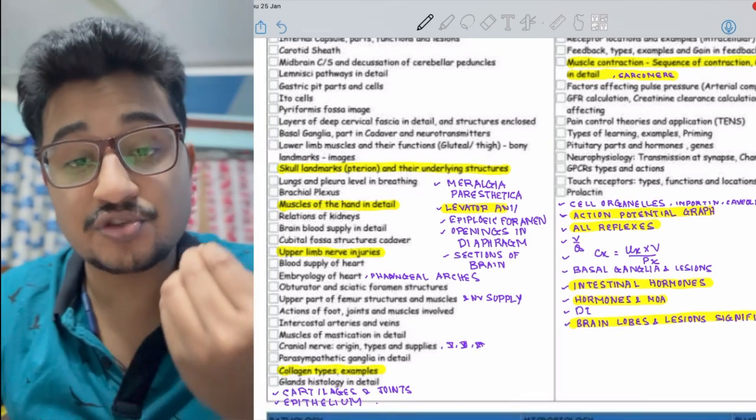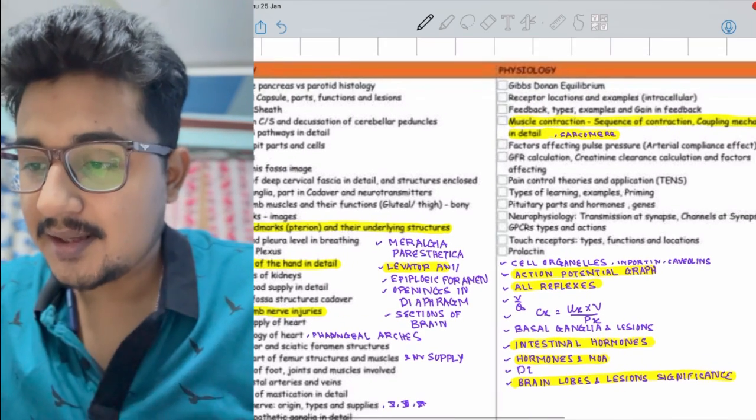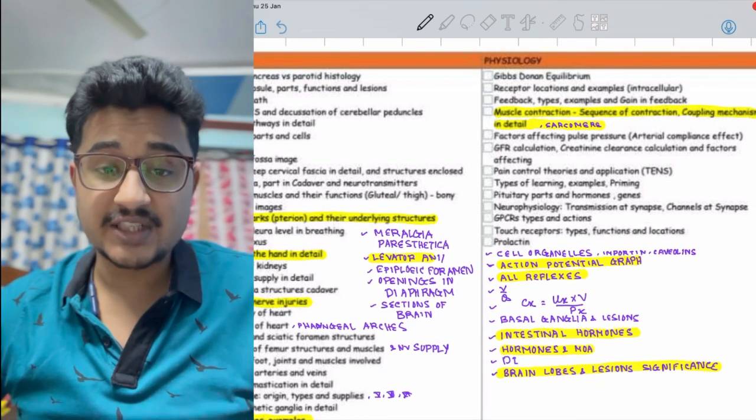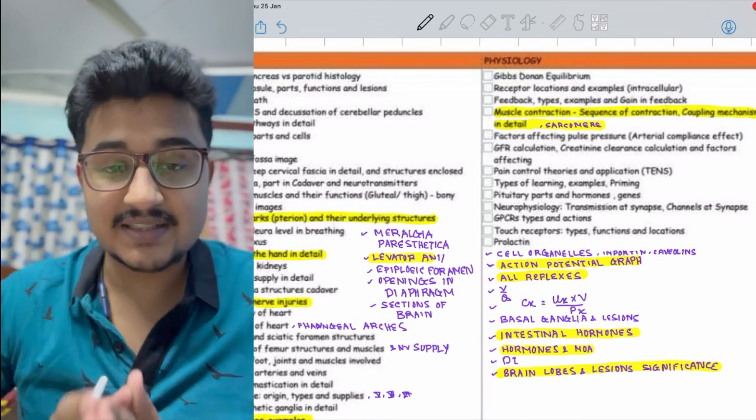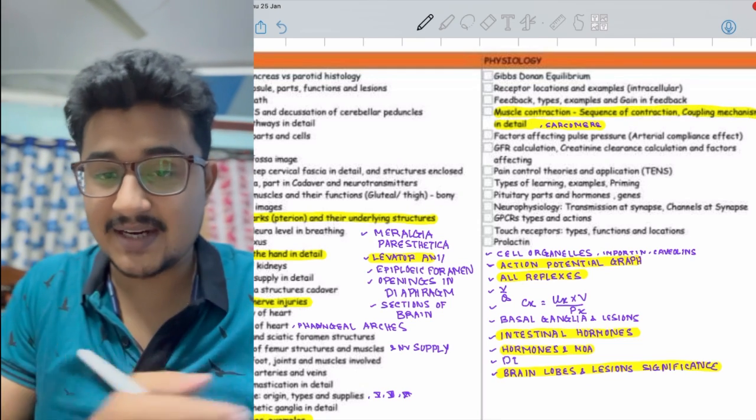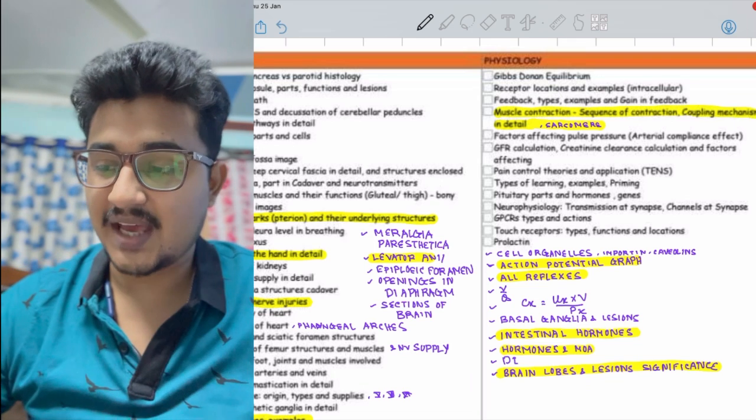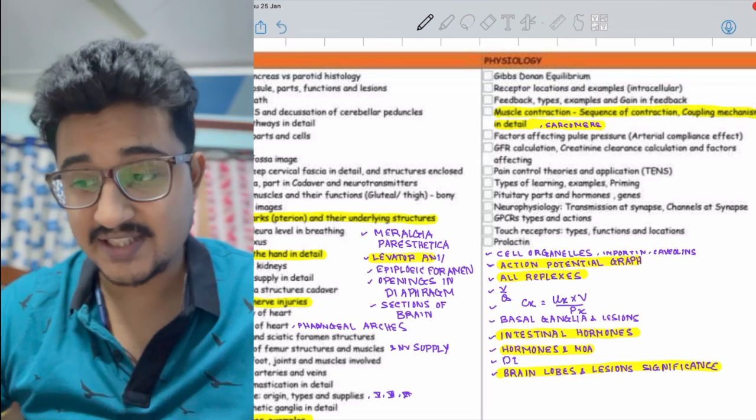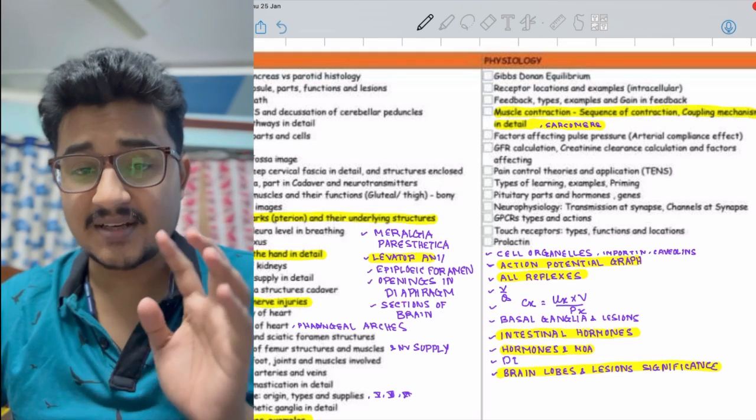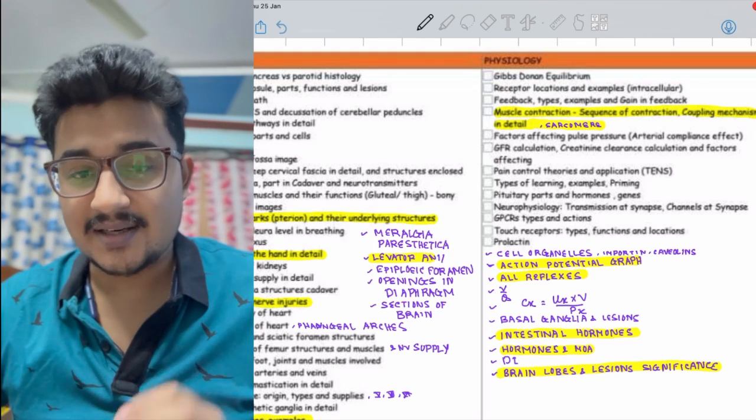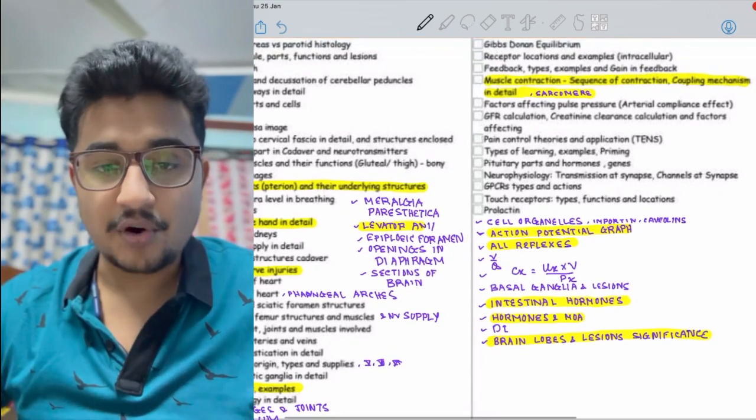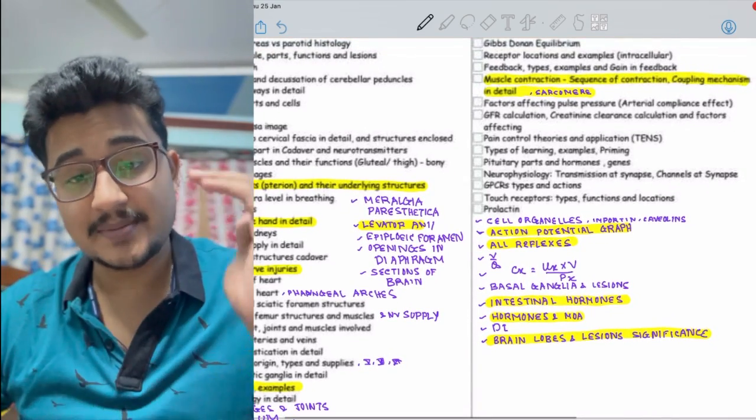In physiology, nowadays more important is the muscle contractions - it's been asked numerous times. The sarcomere, the unit of sarcomere, the I and M bands - all you should remember. Action potential graphs are being asked nowadays. All the reflexes, all sorts of reflexes are asked in INICET.